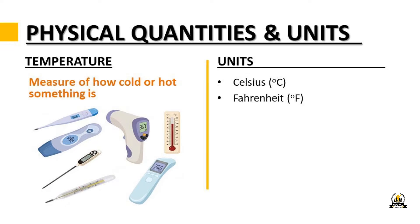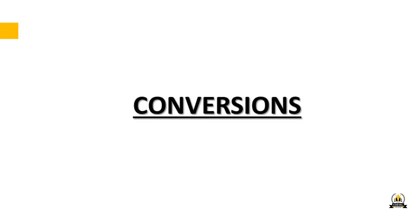Temperature is a measure of how cold or hot something is. You may remember during COVID times, temperatures were measured and recorded. With babies having a fever, if the temperature shoots up to 39 or 40 degrees, it's important to take them to the ER. The units for temperature are Celsius — shown with a small circle and a 'C' — and Fahrenheit, shown with a small circle and an 'F'. There is also Kelvin, but the two common ones are Celsius and Fahrenheit.